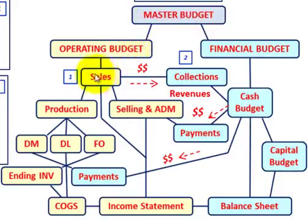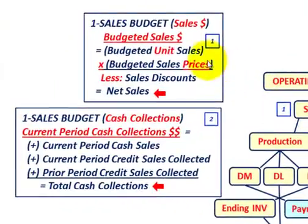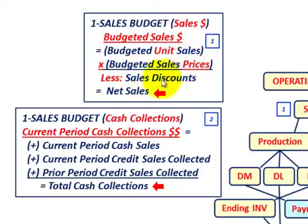Looking at our sales budget and collections: for our sales budget, our budgeted sales dollars equal the budgeted unit sales times our budgeted sales prices, less any sales discounts, and we get down to our net sales.